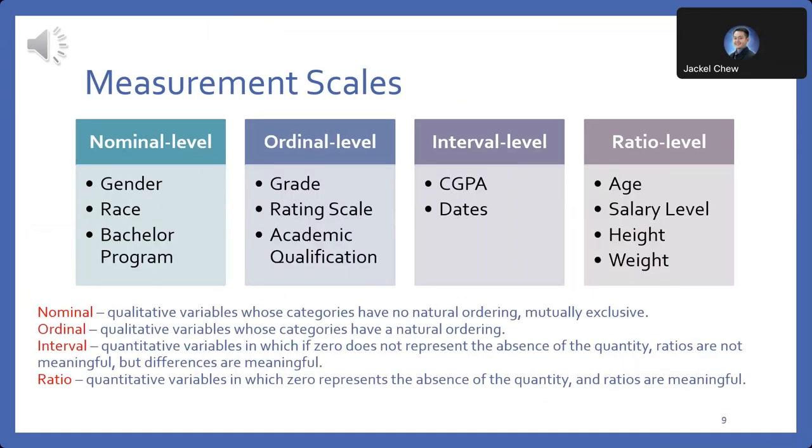Measurement scales play a crucial role in data analysis and interpretation. Let's begin by examining the four main types of measurement scales. Nominal scales are characterized by qualitative variables with categories that have no natural order. These categories are mutually exclusive, meaning an observation can only belong to one category. For example, gender such as male, female and race such as Malay, Chinese, Indian, Bumiputera, Sabah, Sarawak are nominal variables.